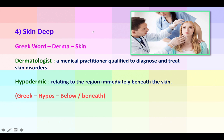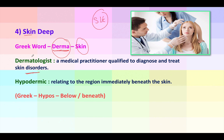Now let's talk about a doctor who specializes in skin diseases. The word 'derma' is a Greek word meaning skin. A dermatologist is a medical practitioner qualified to diagnose skin disorders. For example, if you have lesions on your skin, allergic reactions, or systemic diseases with skin manifestations — like systemic lupus erythematosus — you would go to a dermatologist.